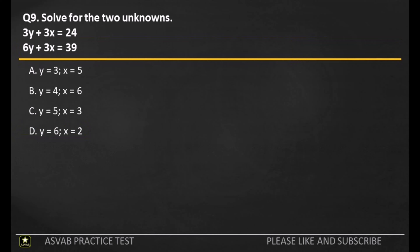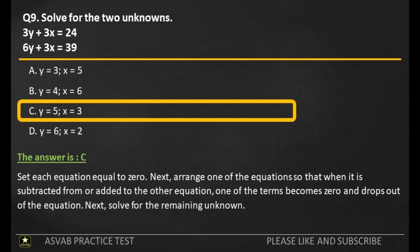Q9. Solve for the two unknowns. A: Y equals 3, X equals 5. B: Y equals 4, X equals 6. C: Y equals 5, X equals 3. D: Y equals 6, X equals 2. The answer is C. Set each equation equal to 0. Next, arrange one of the equations so that when it is subtracted from or added to the other equation, one of the terms becomes 0 and drops out. Then solve for the remaining unknown.